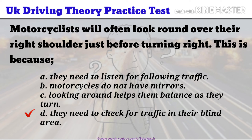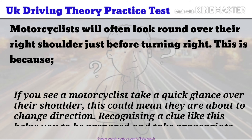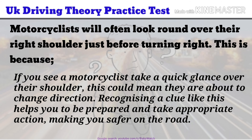They need to check for traffic in their blind area. If you see a motorcyclist take a quick glance over their shoulder, this could mean they are about to change direction. Recognising a clue like this helps you to be prepared and take appropriate action, making you safer on the road.